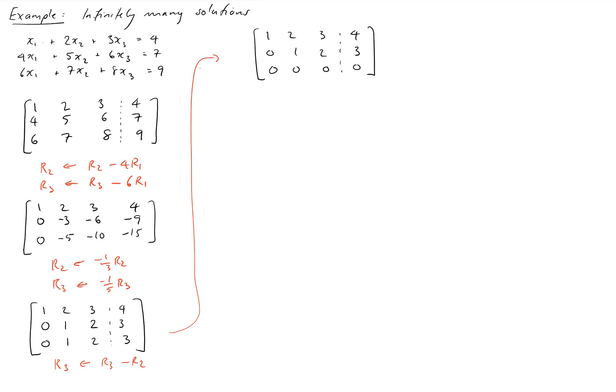Okay, at this point we've hit echelon form. But I've noticed that I don't have a full set of pivot variables here. I have two pivots, x1 and x2, and we're going to have one free variable. So in the situation where we have free variables it's usually best to proceed completely to reduced row echelon form because it makes the substitution process easier.